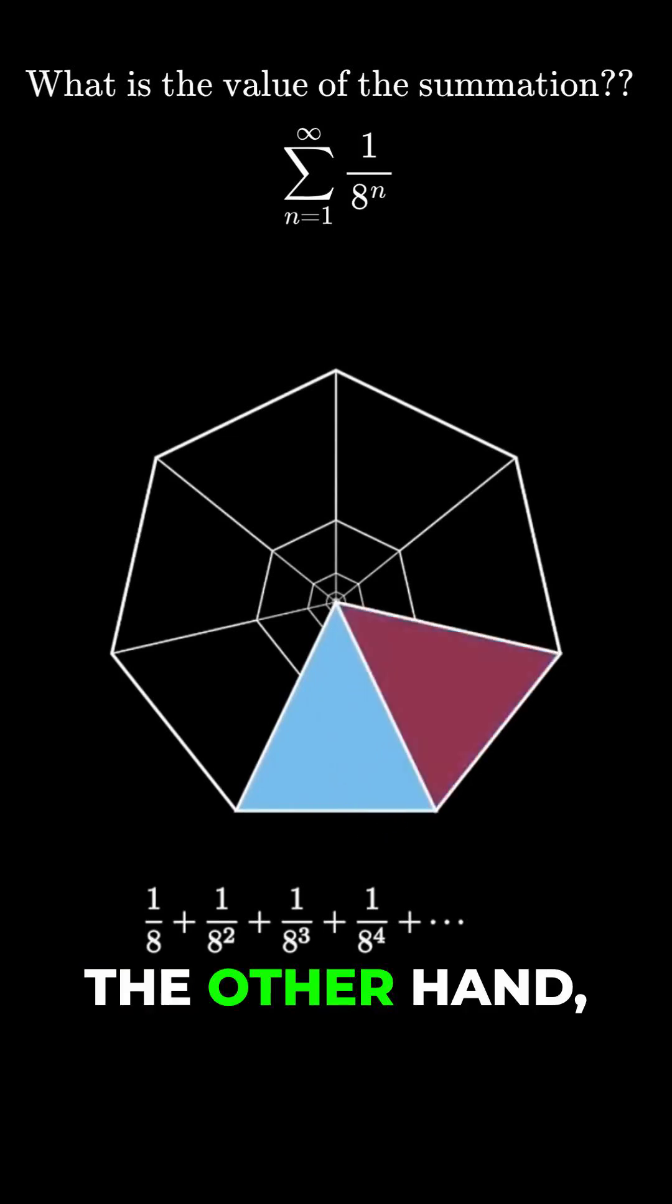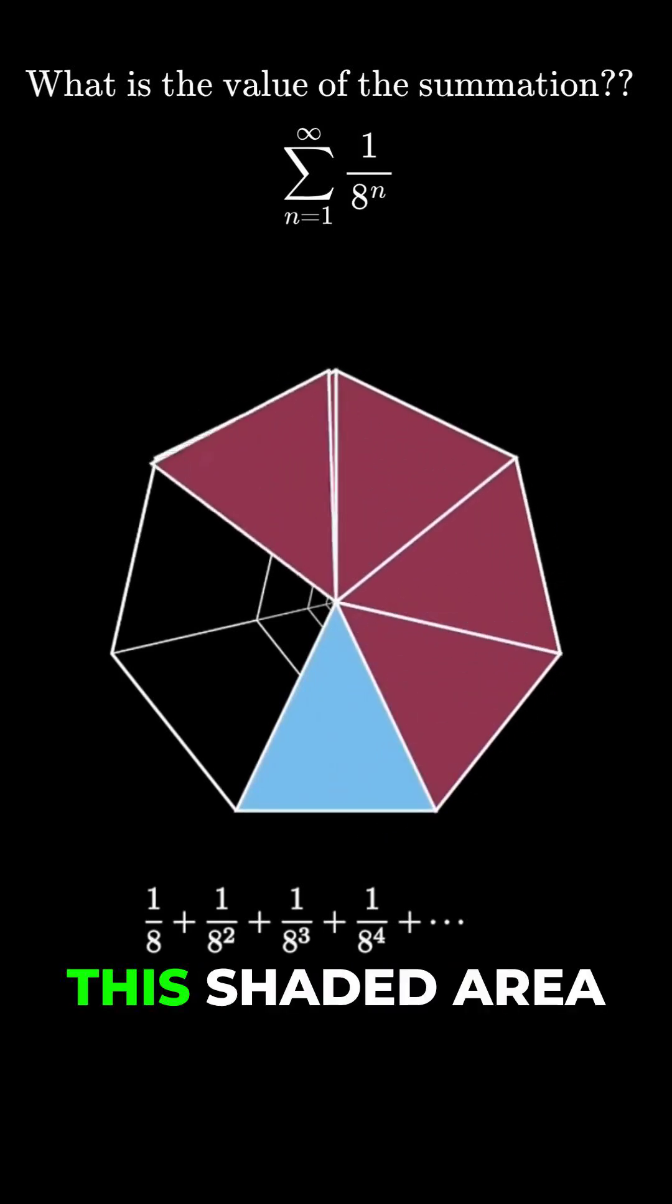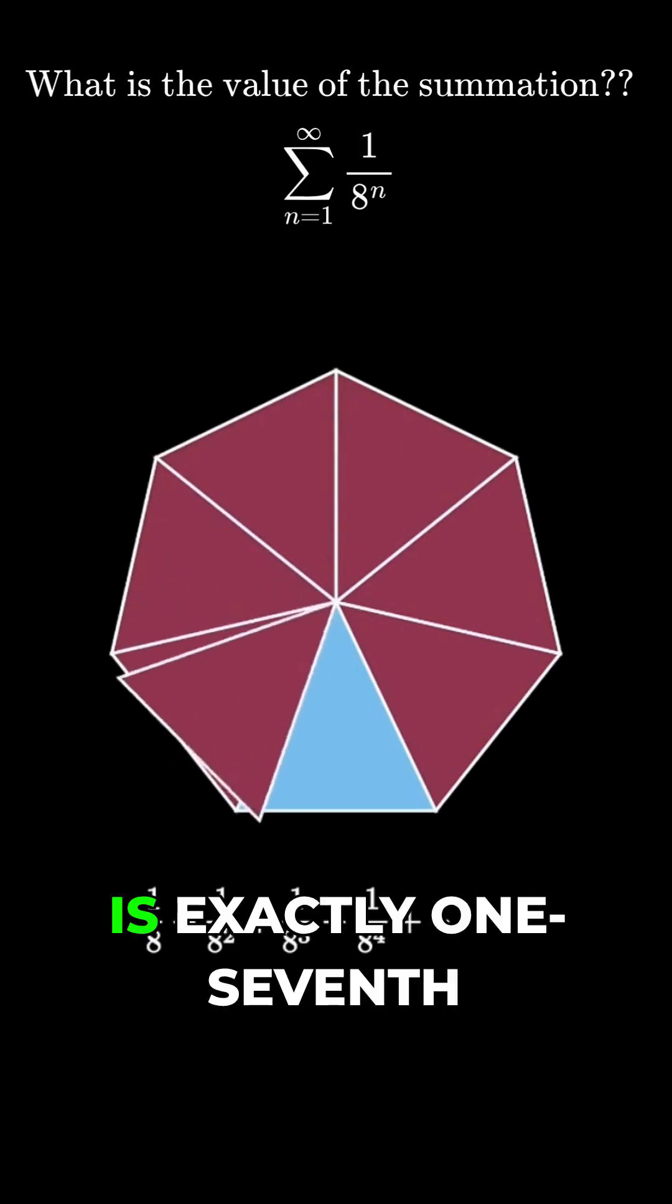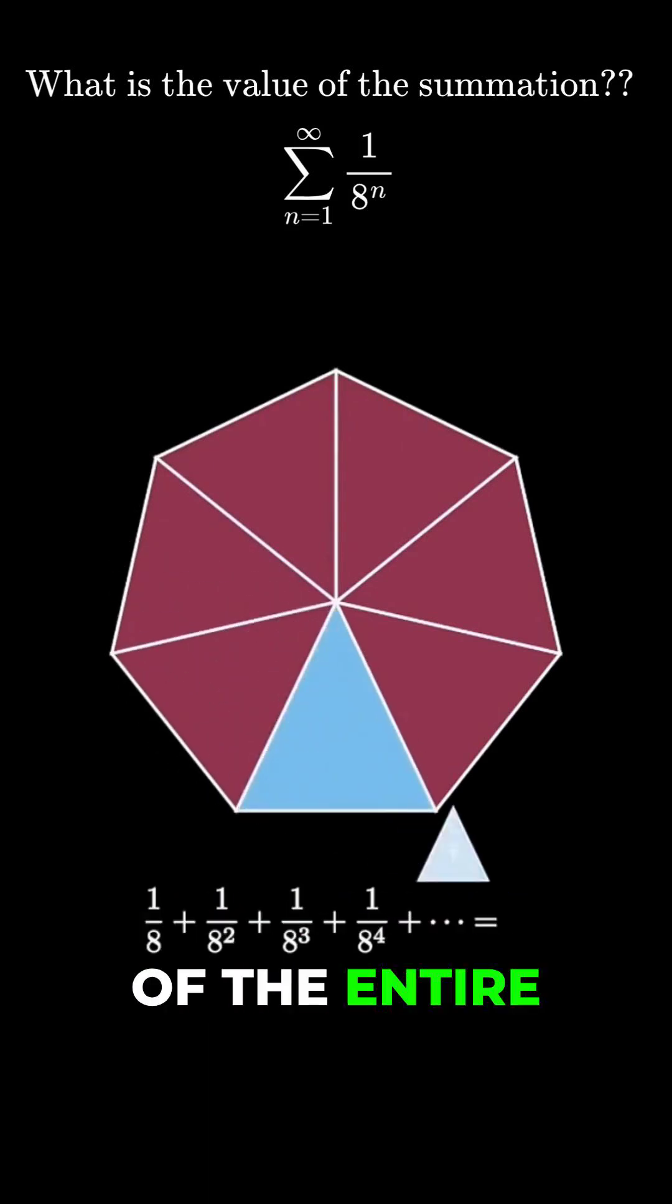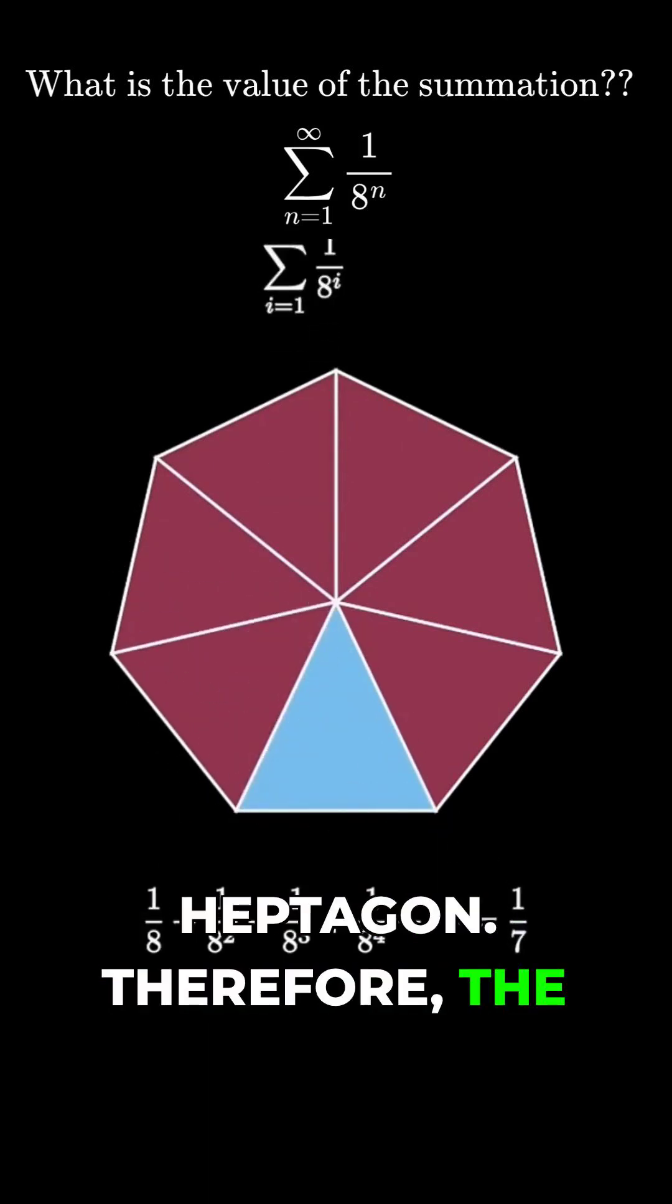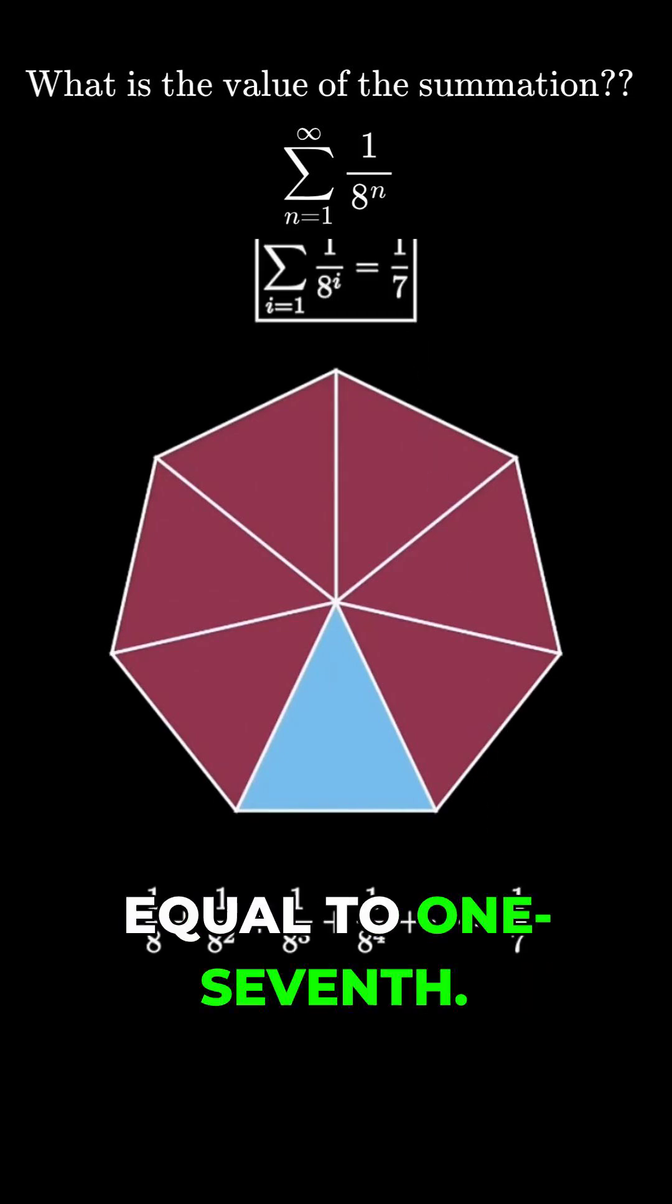But on the other hand, we see that in terms of the full picture, this shaded area is exactly one-seventh of the entire heptagon. Therefore, the sum of powers of one-eighth is equal to one-seventh.